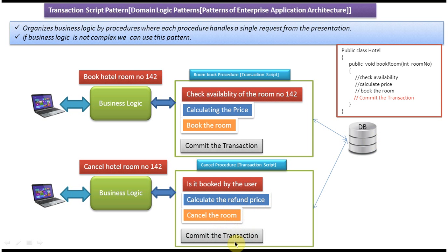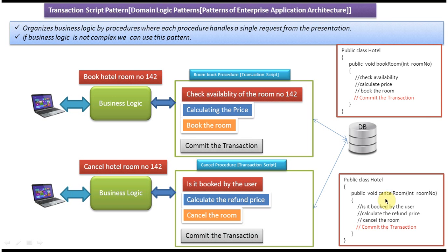Once those steps are done, commit the transaction. The cancelRoom method takes room number as a parameter and performs the steps: check the room, calculate the refund price, refund to the user, cancel the room, and commit. So booking the hotel room is one business logic and canceling the hotel room is another. For each business logic we have a separate procedure to handle the client's request.